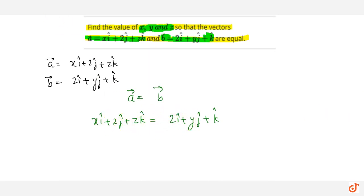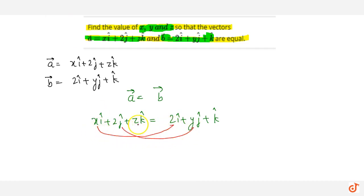Now I can compare the two vectors component by component: î to î, ĵ to ĵ, and k̂ to k̂. Because if the two vectors are equal, their corresponding components must be equal.